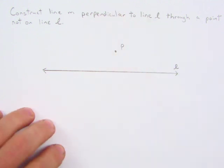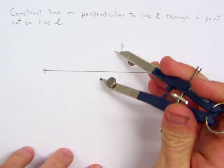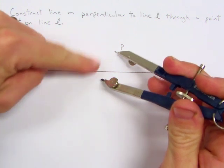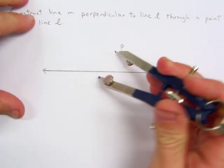So the first thing you're going to do is place the compass at point P, and then draw an arc that intersects line L in two places. So you have to open the compass wide enough so that it will intersect L in two places.